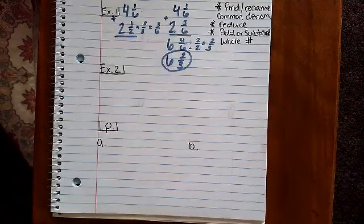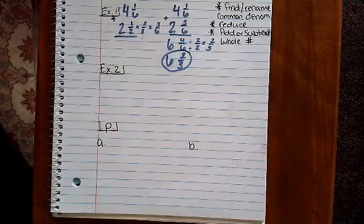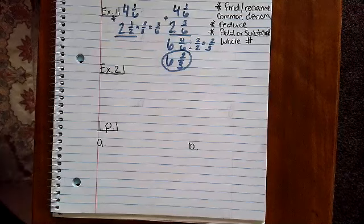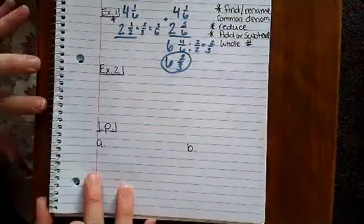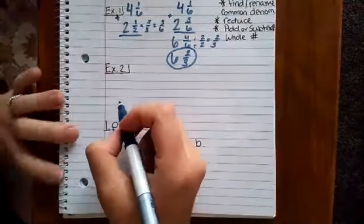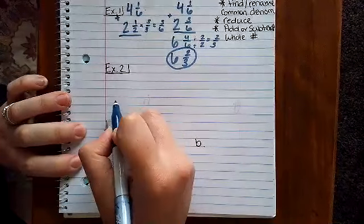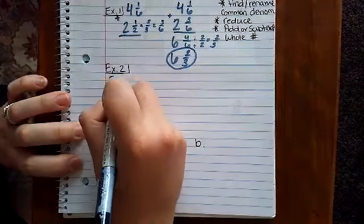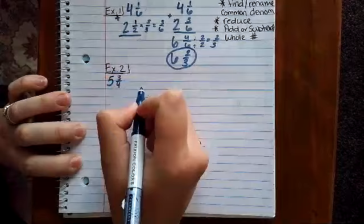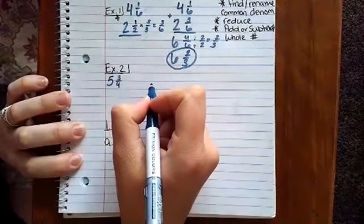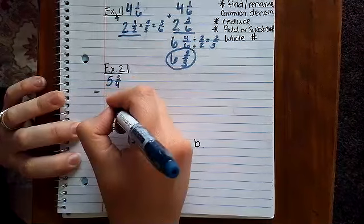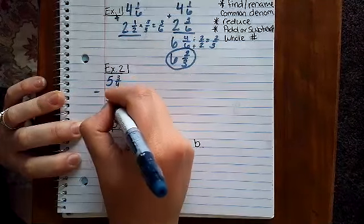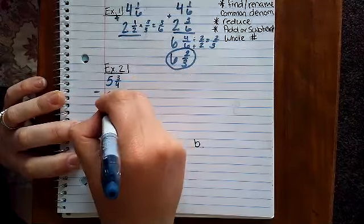So first we need to write the problem so that they have common denominators. That's the first thing that you need to do. The numbers we're dealing with are going to be, I'm going to write this so we can all see it. I'm going to write it where we have 5 3/4 and we are subtracting 3 1/2.